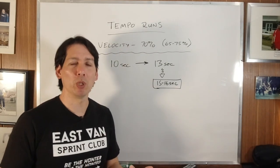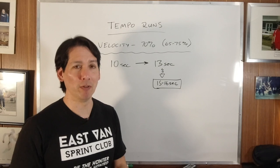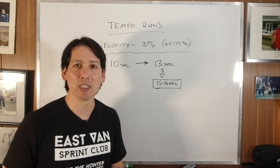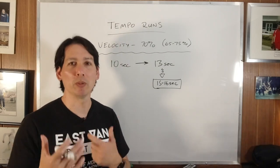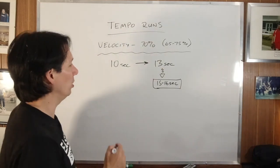So a lot of the time, what I come up with for somebody who is a higher-level sprinter is about 15, 16 seconds. We don't want them racing. We don't want them doing anything crazy.